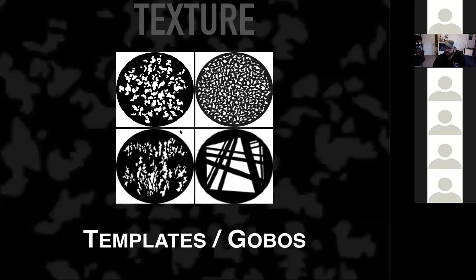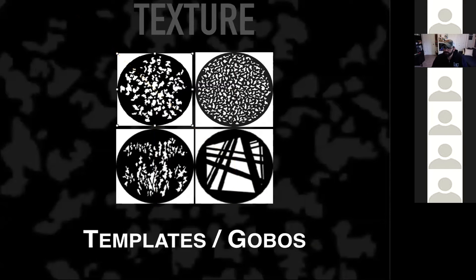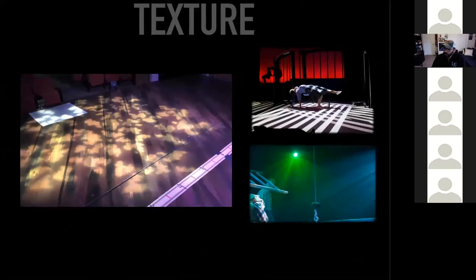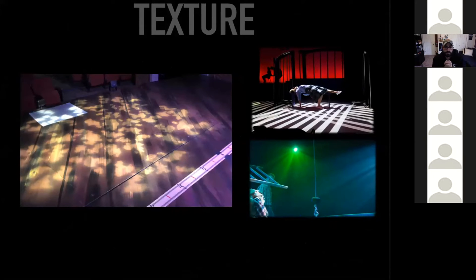Texture involves templates and gobos. My go-to is GAM 579. You can have breakups, very literal gobos with text, logos, things like that. Haze also comes into play here — I like to tell skeptical producers: I could light all your scenery and people, or I could light the entire atmosphere. I could make the set red, or make the entire theater feel red — very different things. You can also frost a gobo slightly to soften its edges.